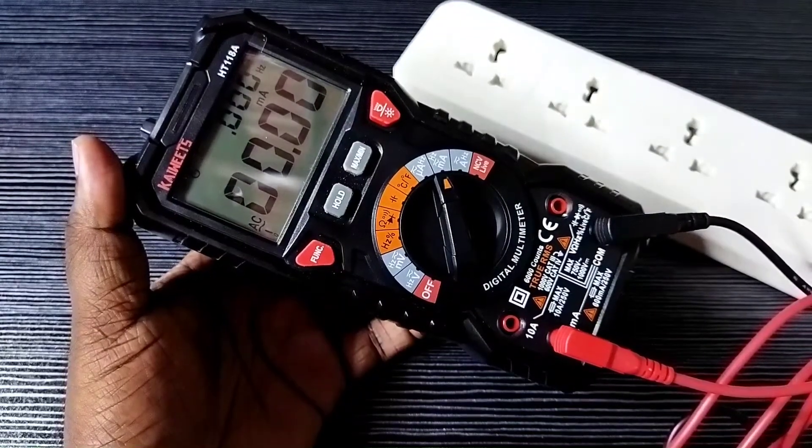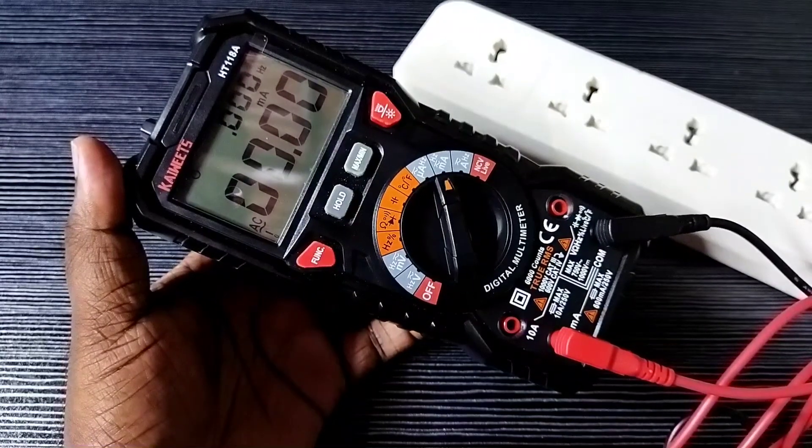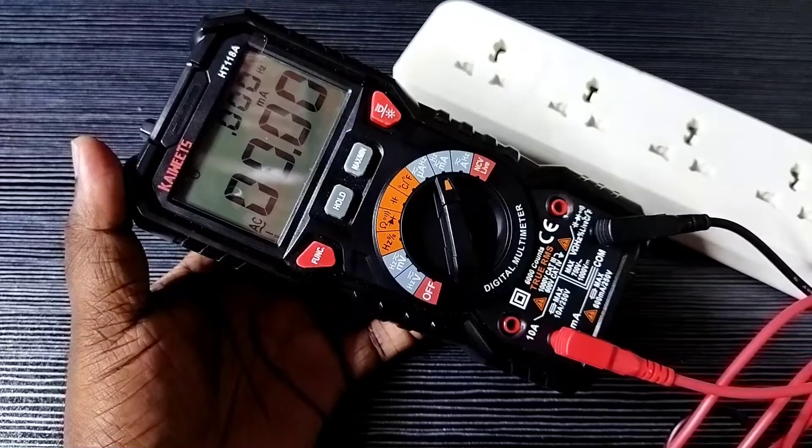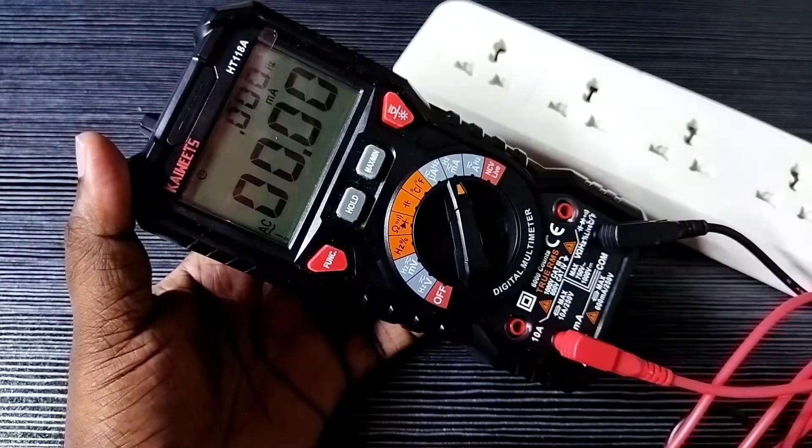This way we can measure AC current and DC current in microamperes using a Kiwitz digital multimeter.